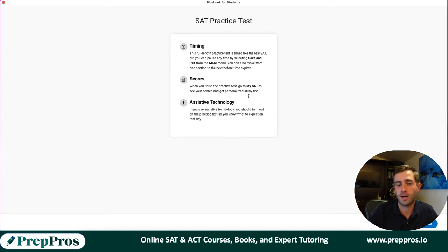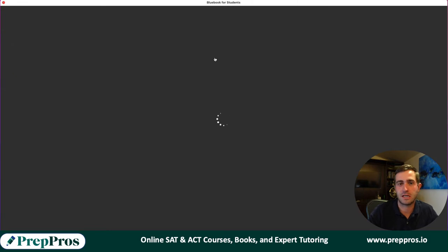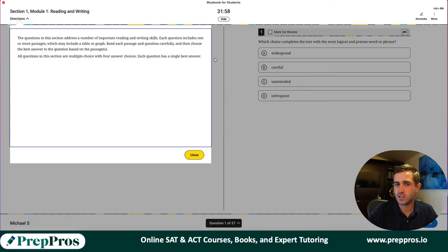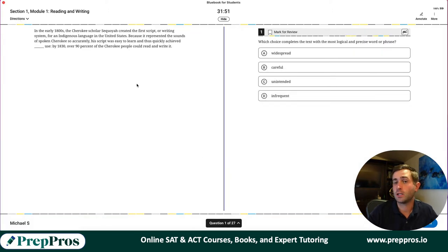Alright, so we're going to run through the first module of the reading and writing section for SAT test number two of the digital tests that they just put online. This is the first one of these that I'm doing, so we're going to start with the second test. Most likely we're going to see pretty much a lot of the same skills that we've seen from the old SAT, but we're going to see a few different question types and a little bit more emphasis on vocab. So for a lot of students, we're going to have to spend some more time studying vocab words because you're going to get ten of these between the two modules.